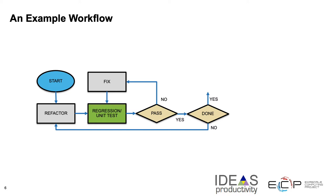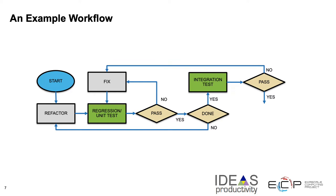At the second decision point, if our refactoring is done, we are still not completely done because now we want to do integration tests and make sure they also pass. We reach a third decision point where if the integration tests pass, then we are really done with the refactoring. But if the integration tests do not pass, we go back to fix the code, go through the loop until regression and unit tests pass, and only when all tests have passed do we declare success.